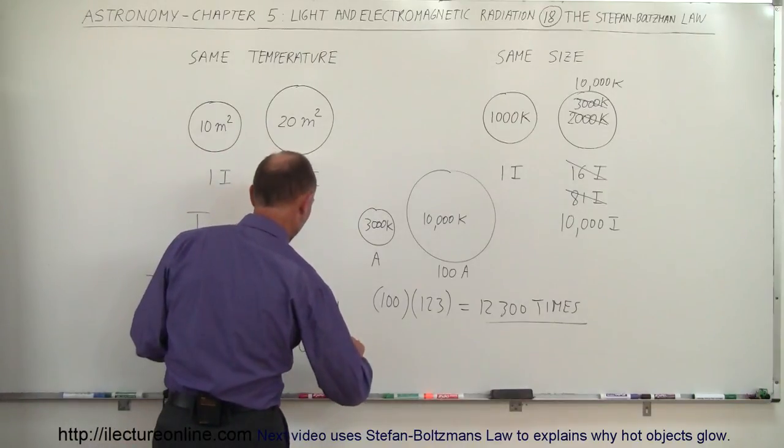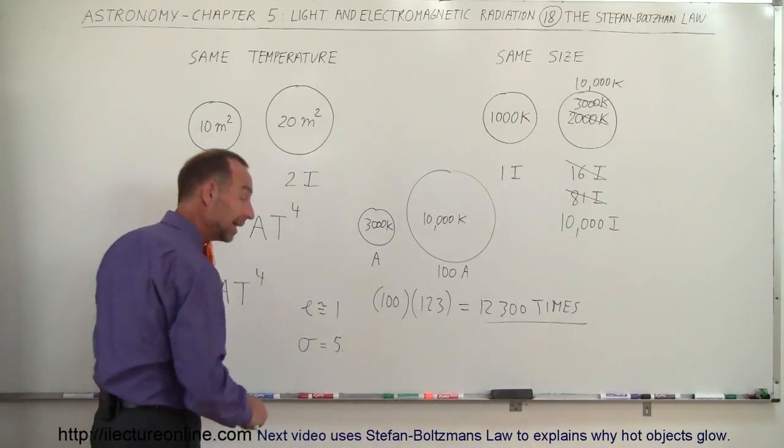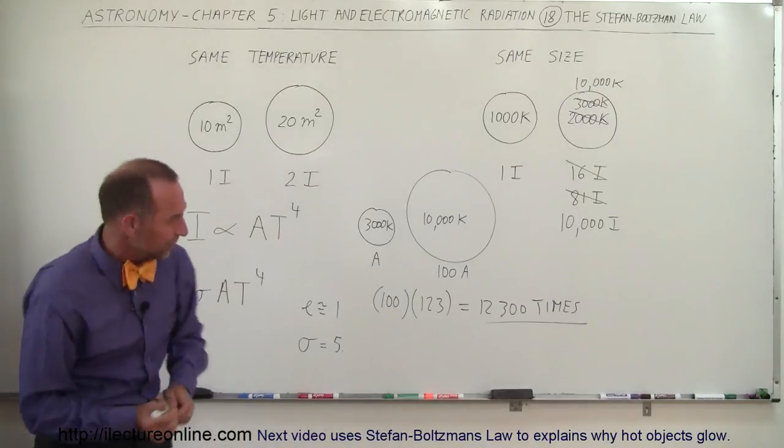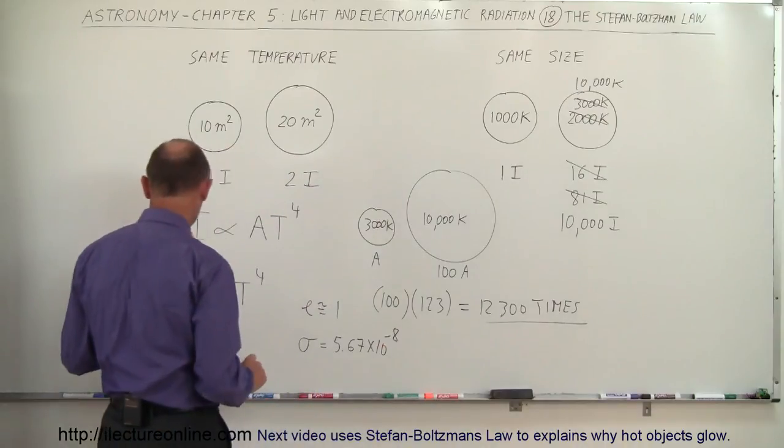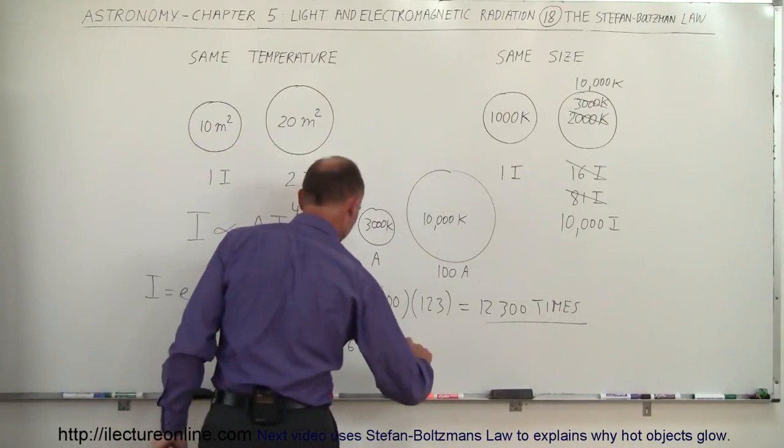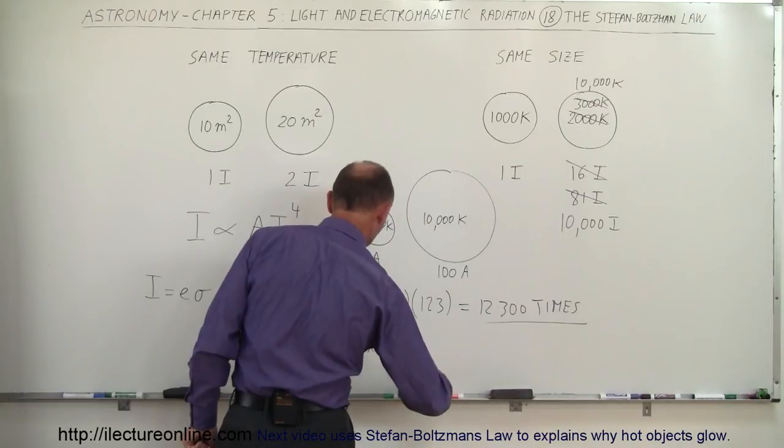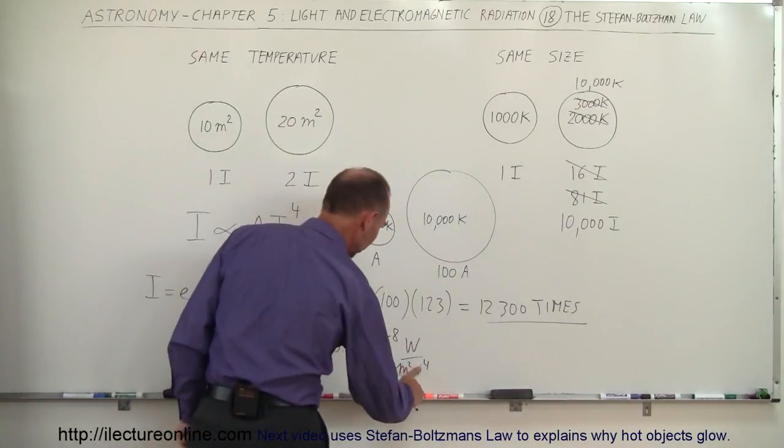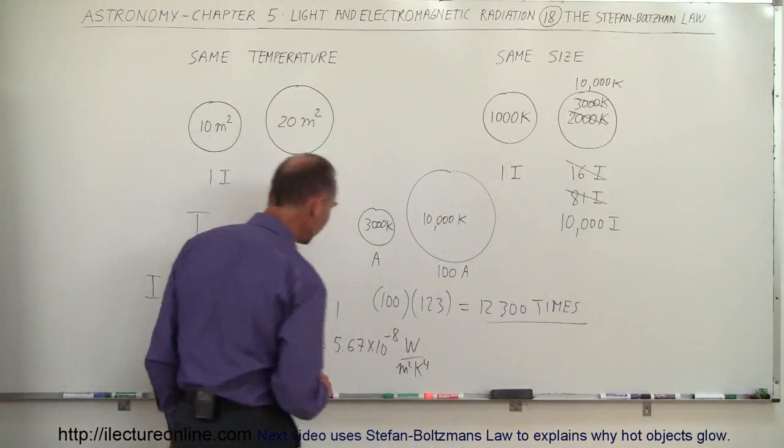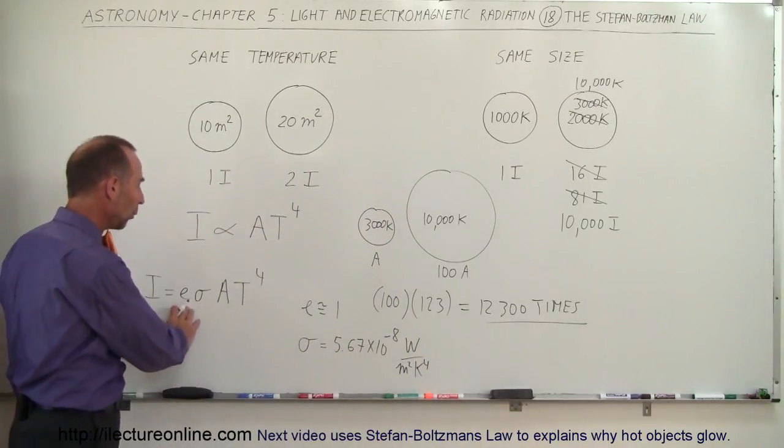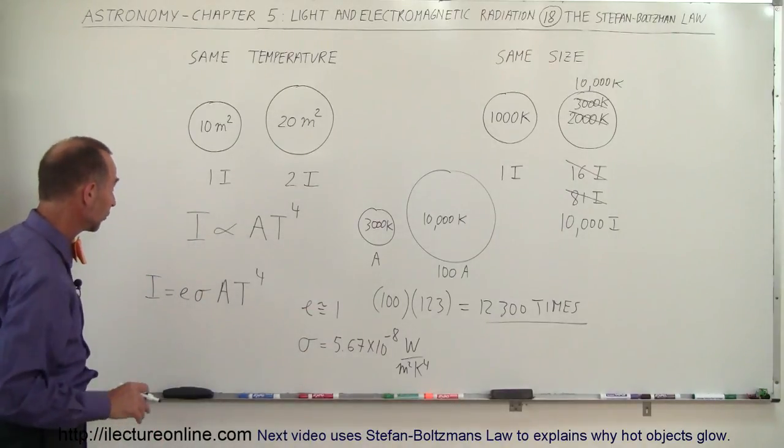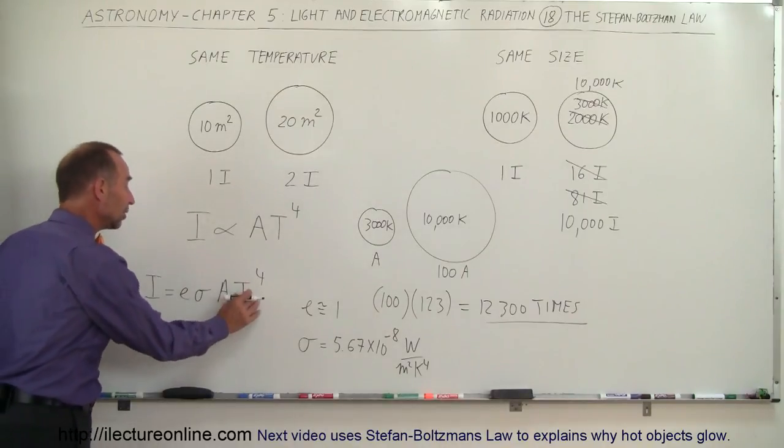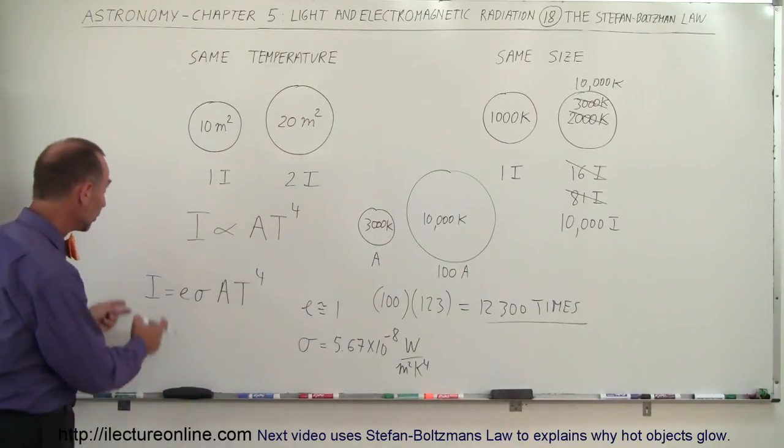Sigma is a constant, 5.67 times 10 to the minus 8, and the units would be watts per square meter per Kelvin to the fourth power. So E is usually about 1, sigma is about 5.67 times 10 to the minus 8 watts per square meter per Kelvin to the fourth power. Then you put in the surface area and temperature, and from that you will get the intensity.